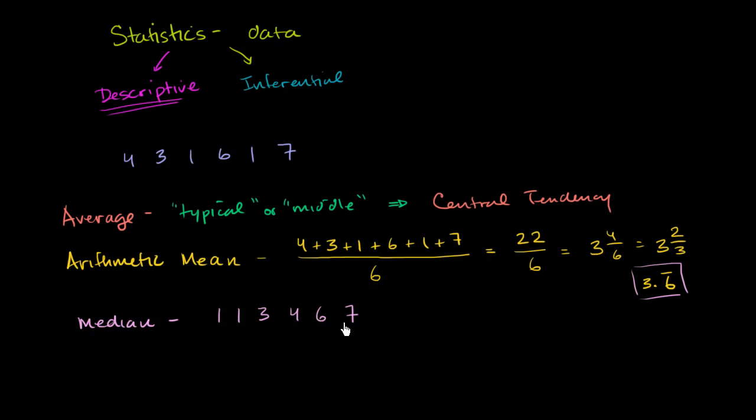Well, you look here. Since we have an even number of numbers, we have 6 numbers. There's not one middle number. You actually have 2 middle numbers here. You have 2 middle numbers right over here. You have the 3 and the 4. And in this case, when you have 2 middle numbers,